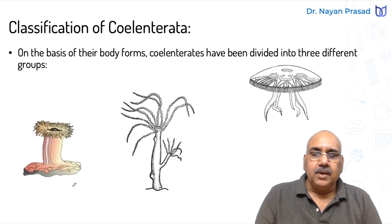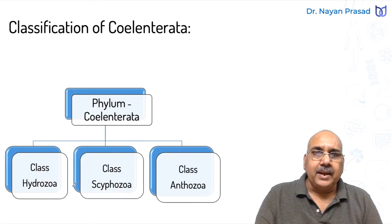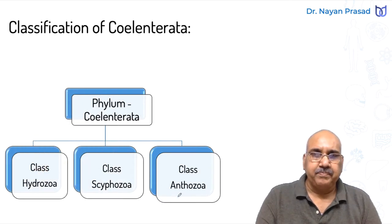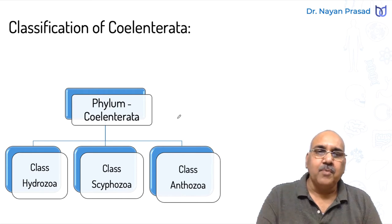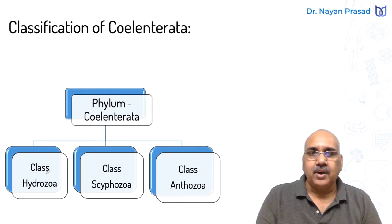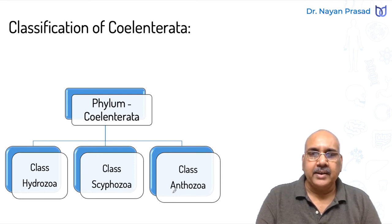Phylum Cylentata has been classified into three different classes on the basis of body forms. These classes are called Hydrozoa, Syphozoa, and Anthozoa.